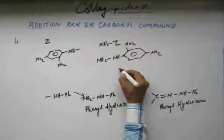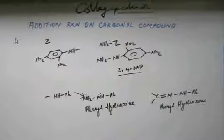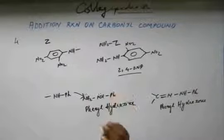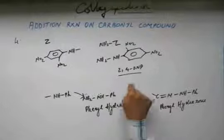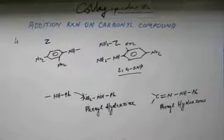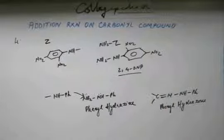They call it 2,4-DNP. This is how you will see this thing to be written in your exam paper. They are not going to write the whole thing, they will write it as 2,4-DNP. 2,4-DNP is 2,4-dinitrophenylhydrazine. This is a very important reagent in organic chemistry, in practical organic chemistry, and we will be seeing the application of this very shortly once we complete this list.